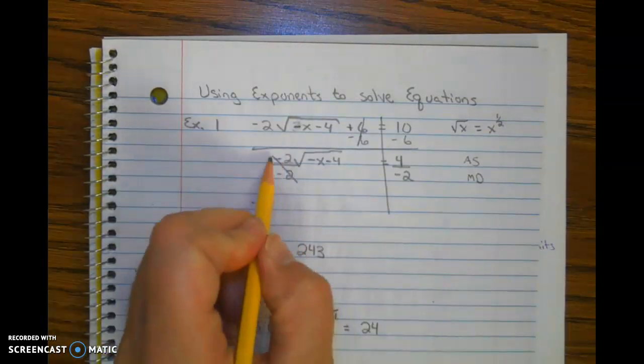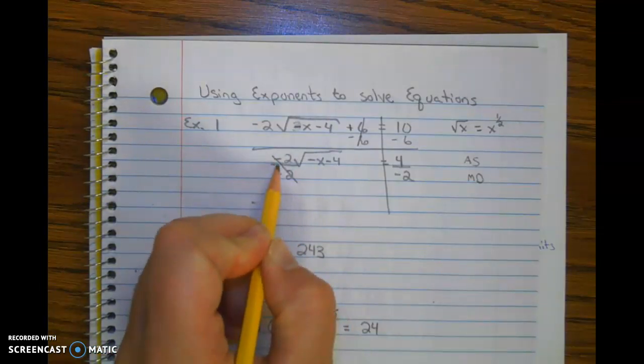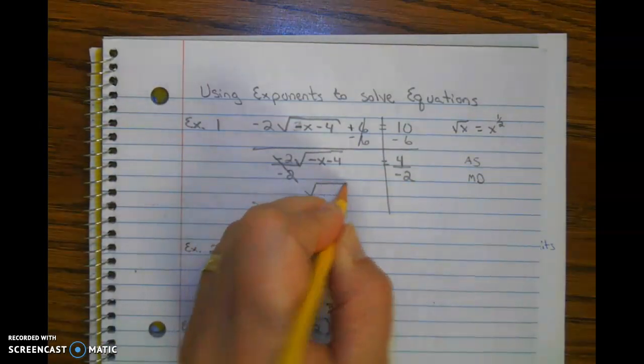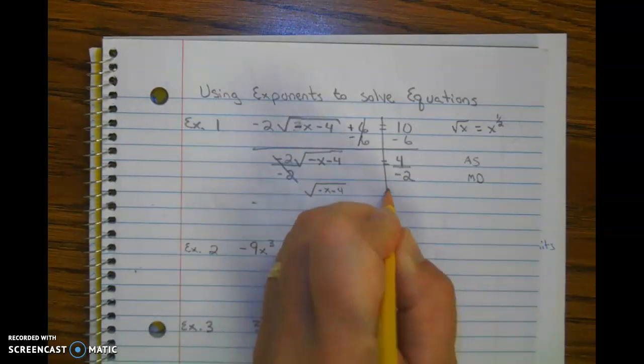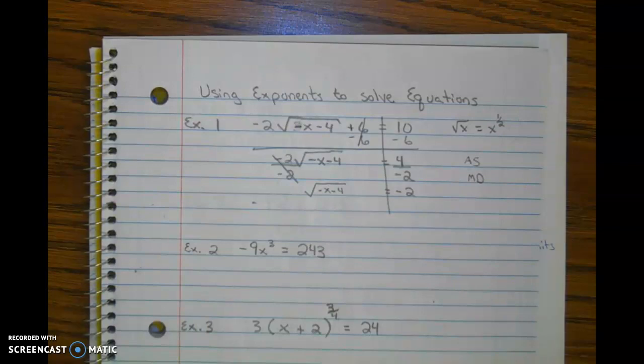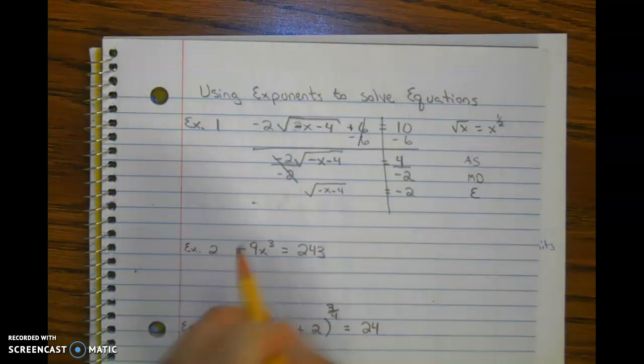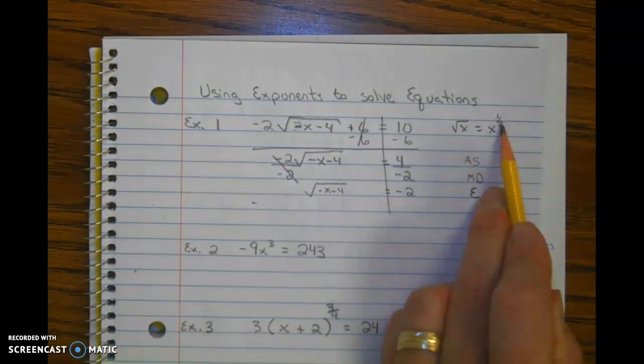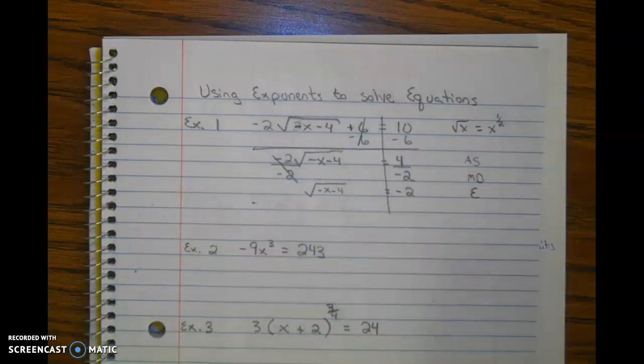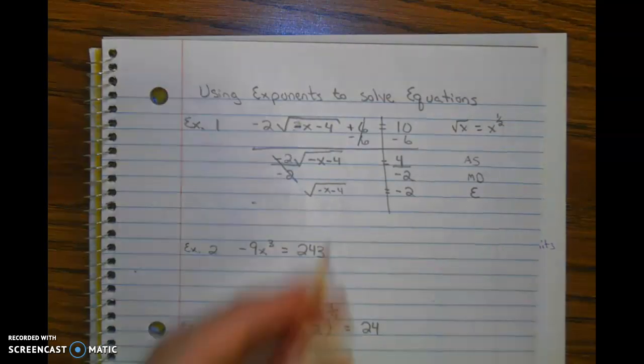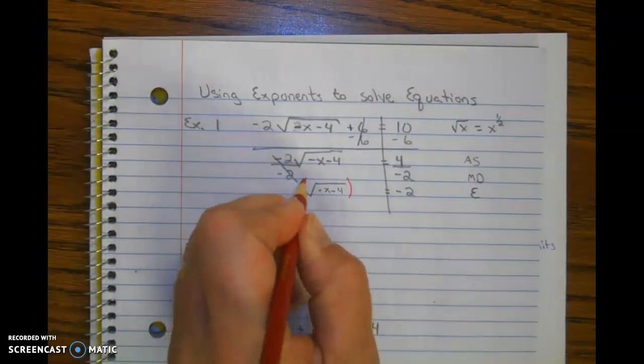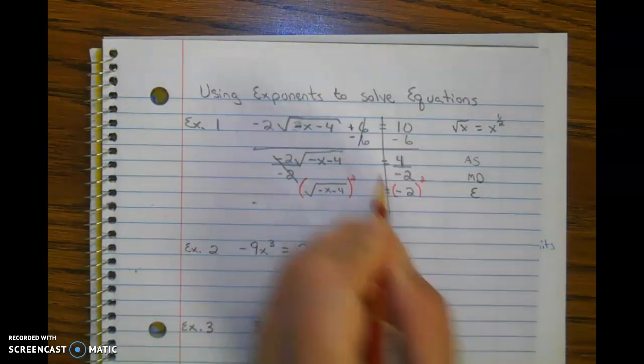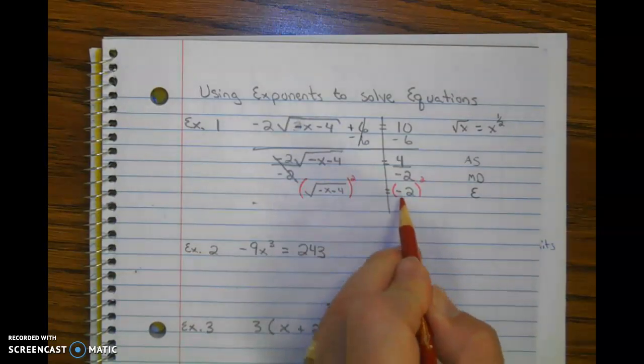Remember, if this is a fraction, you can also undo a fraction by multiplying by the reciprocal on both sides. Next we're going to undo that exponent. Remember this is negative x minus 4 to the one-half power. So we're going to raise both sides to the reciprocal. The reciprocal of one-half is 2 over 1, or just 2. So we're going to square both sides. Don't forget you need to square the negative and the 2.